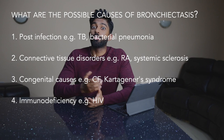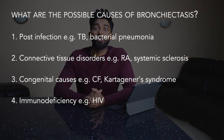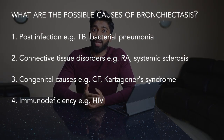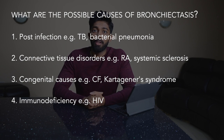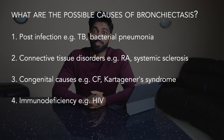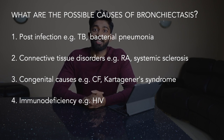The next question they could ask you is on the possible causes of bronchiectasis. The most common cause would be post-infection such as TB or bacterial pneumonia. There'd also be other causes linked to connective tissue diseases such as rheumatoid arthritis or systemic sclerosis. Congenital causes include cystic fibrosis and Kartagener syndrome. And another possible cause would be immunodeficiency, for example HIV.